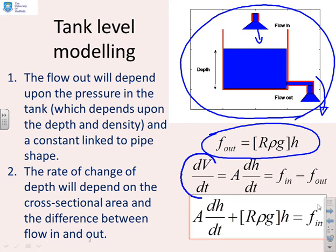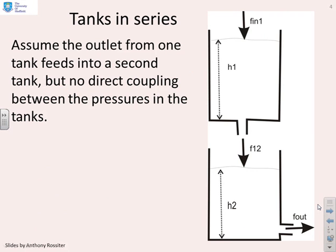The rate of change of volume in the tank can be written as A dh/dt, A being the cross-sectional area, h being the depth, and that must be equal to the flow in minus the flow out. If you put these two equations together, you ended up with your first-order model. There it is, A dh/dt plus R rho g times h equals the flow in.